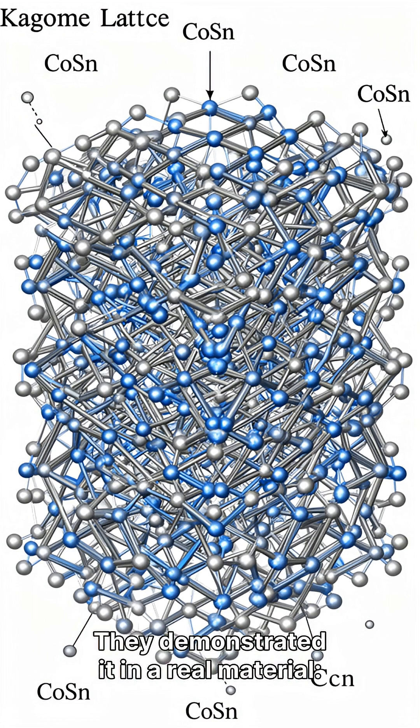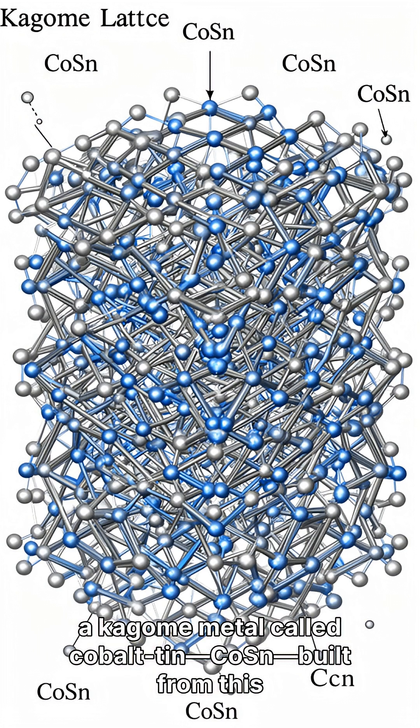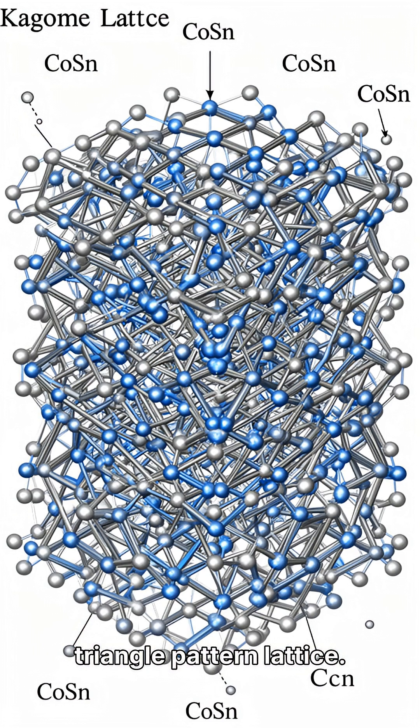They demonstrated it in a real material. A kagome metal called cobalt tin, Co-Sn, built from this triangle pattern lattice.